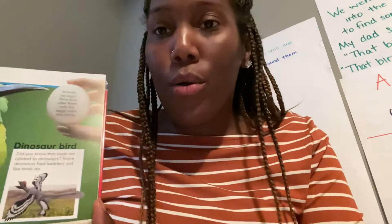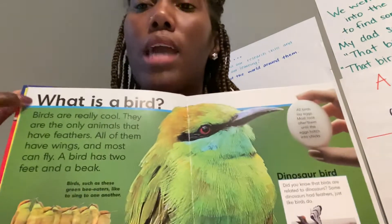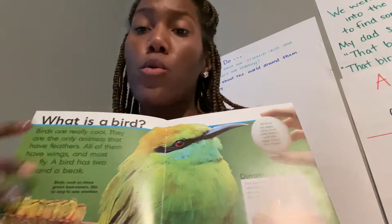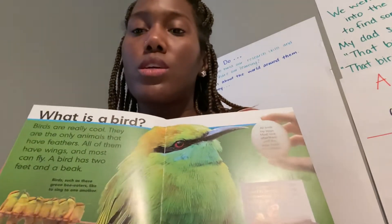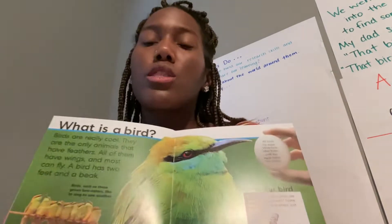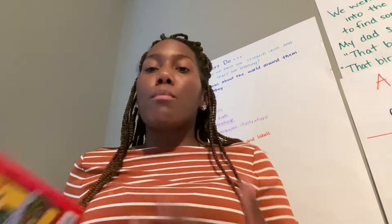Now we know birds are related to dinosaurs. We've learned so much by just reading these two pages. As we were reading, what other text features did you find? I know we saw a caption. What else did you find? I saw lots of photographs — that's another text feature. And those smaller words that we call a caption. Those are all things that the author puts in the book to help us understand our text better. Our heading is our most important text feature because it tells us what the pages are about.